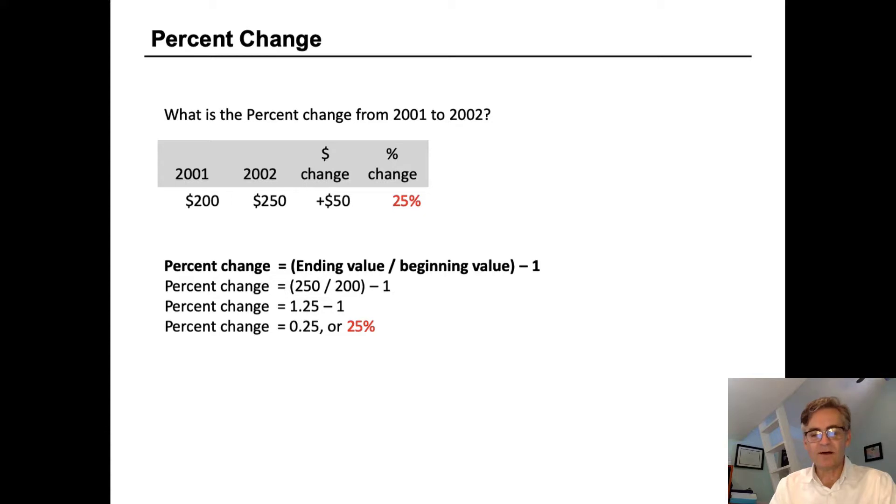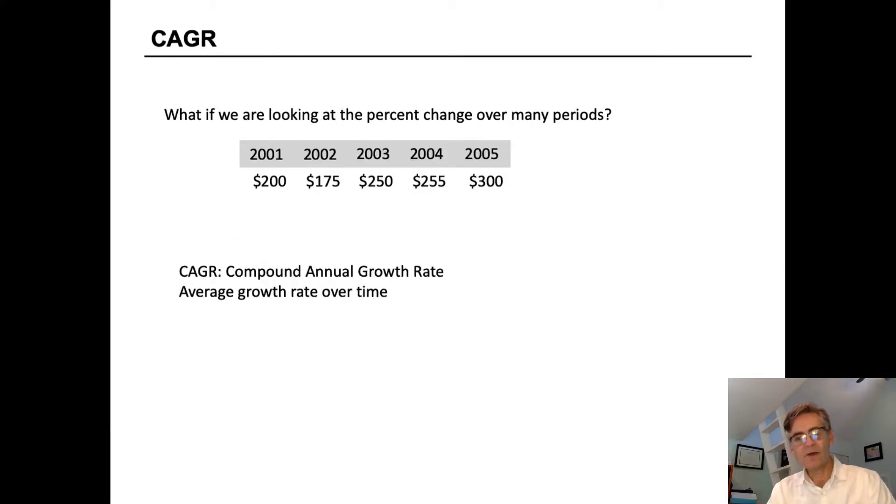What happens if we're looking at the percent change over many periods? Here's an example from 2001 to 2005, and we'll call these maybe revenue numbers in thousands.